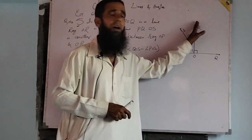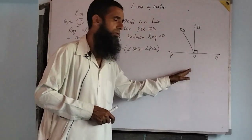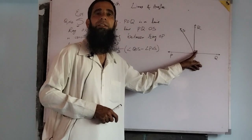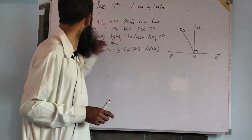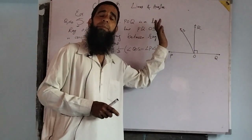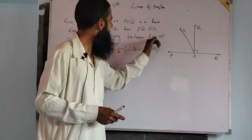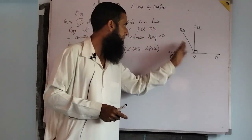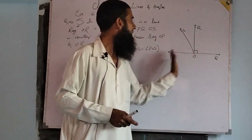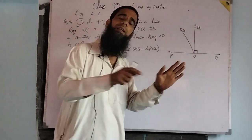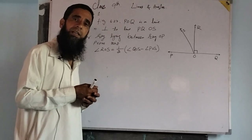Ray O-R is perpendicular to line P-Q, yeh perpendicular hai, means it is 90 degrees here — this angle is a right angle. And O-S is another ray. O-S yahan pe ek aur ray hai, jo lie kar rahi hai O-P and O-R ke darmiyaan mein.